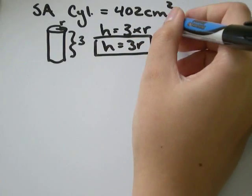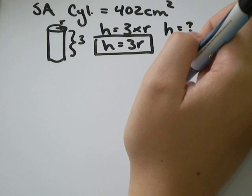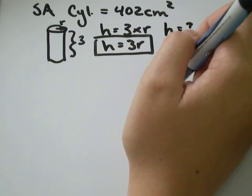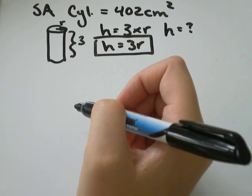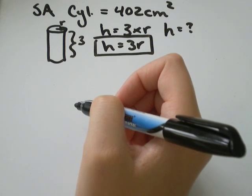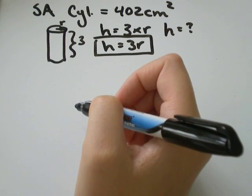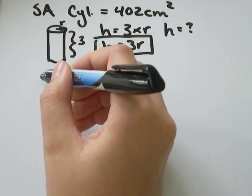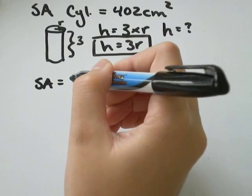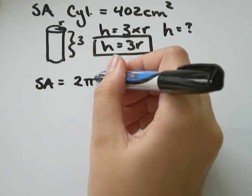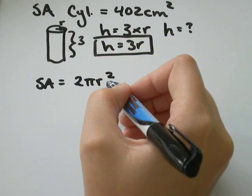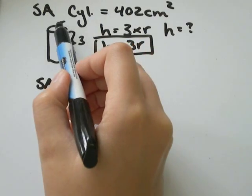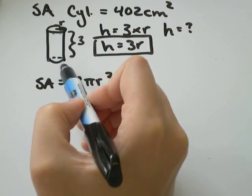We're being asked to find the height. So height equals something. And the first thing I would do is write down the formula for surface area of a cylinder and then figure out what information was given to you in the question and substitute that in. So the surface area of a cylinder is equal to 2πr². πr² is the area of a circle.